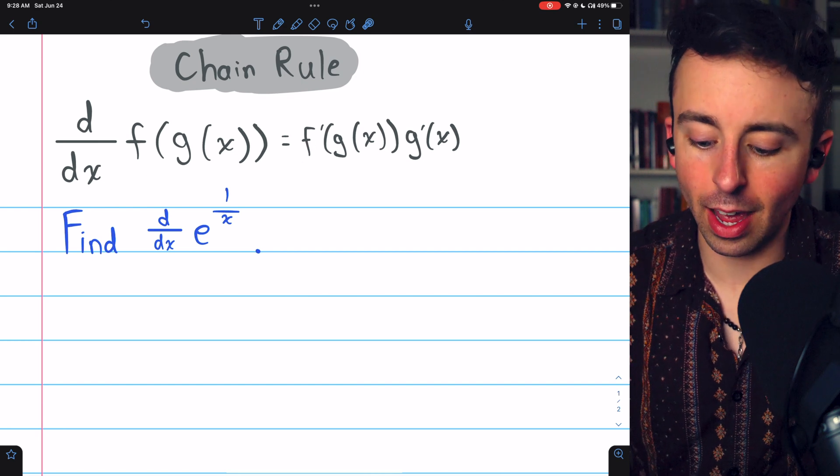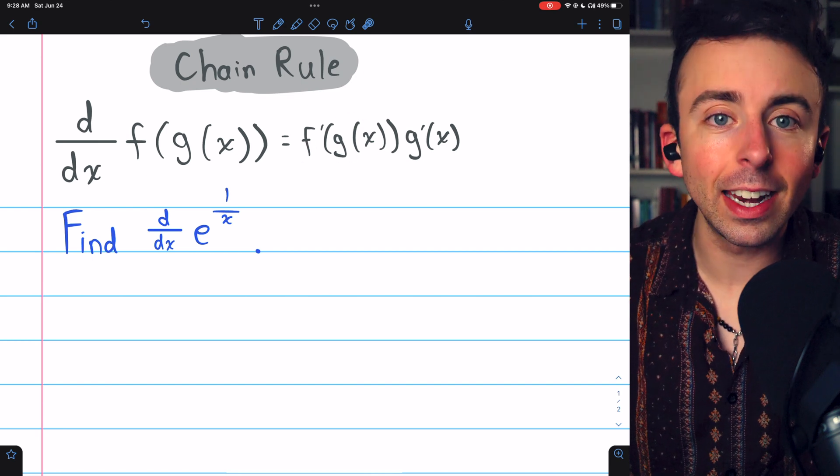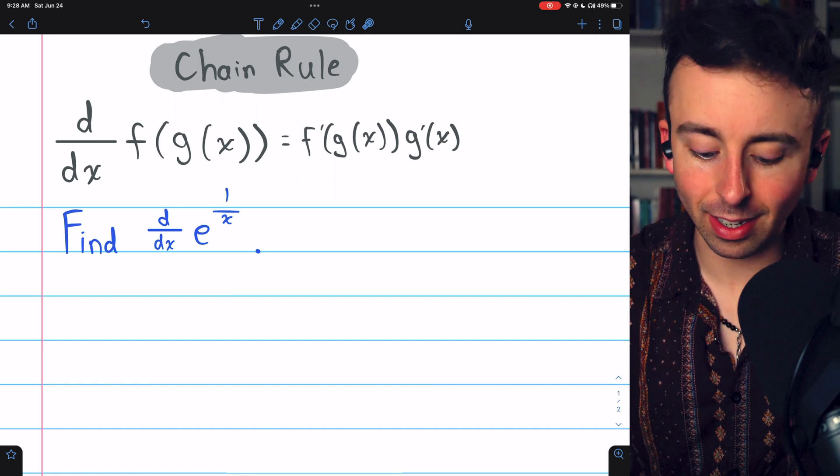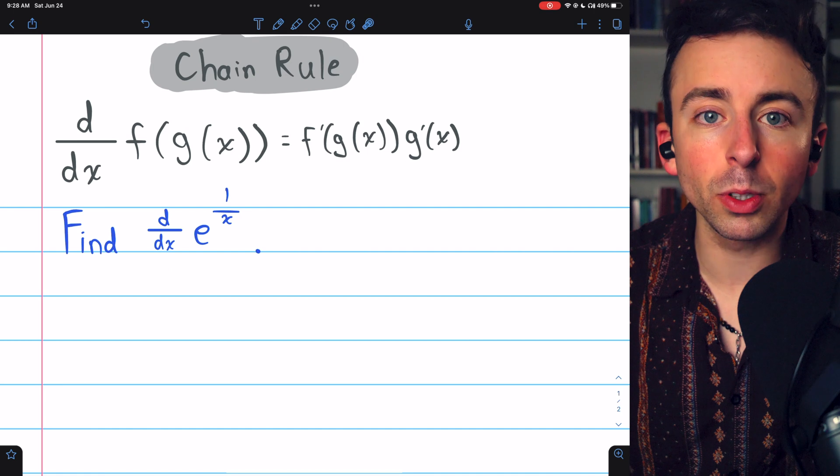That's the derivative of the outside evaluated at the inside multiplied by the derivative of the inside. So if we can identify the outside and inside functions in this case we'll be able to apply the chain rule.